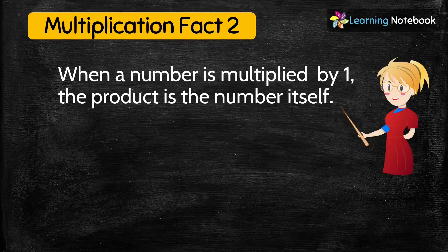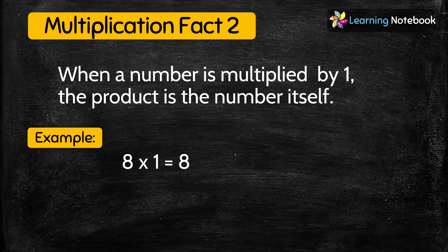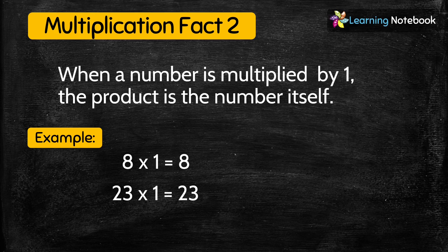Now let's see the second multiplication fact: when a number is multiplied by 1, the product is the number itself. For example, if we multiply 8 by 1 we get 8. Similarly, if we multiply 23 by 1 we get 23 itself. So whenever a number is multiplied by 1, the product will be the number itself.